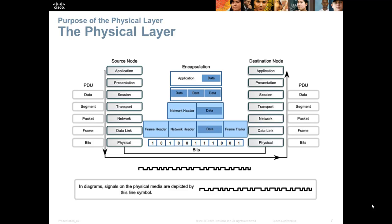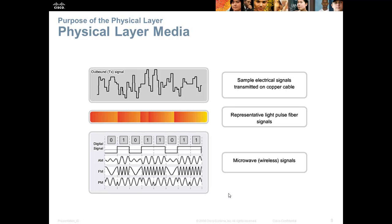This chapter talks about the physical layer, which is at the very bottom of the OSI model. The physical layer is represented by bits — ones and zeros — which can be represented by signals on physical media. The three main types of physical media covered are copper, which uses electrical signals; fiber optic, which uses light pulses; and wireless, which uses radio waves or microwaves to send signals through the air.